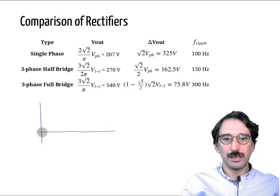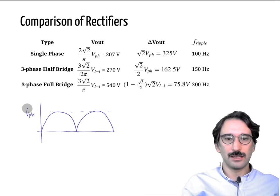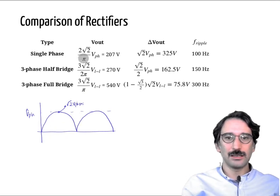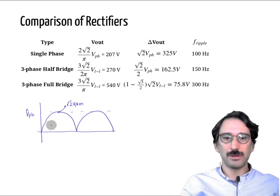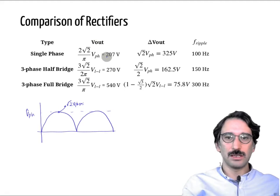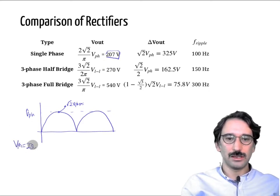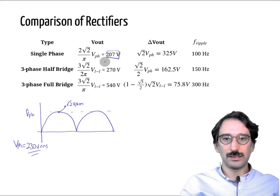In a single phase rectifier, the output voltage waveform peaks at V_phase_peak, which is square root 2 times V_phase_rms. Calculating the area under the waveform — two times square root 2 times V_phase_rms divided by 2π — the average output voltage comes out to 207 volts when fed from a 230V rms phase voltage, which is 0.9 times that value.